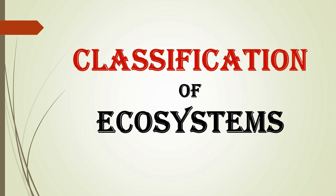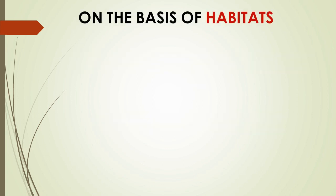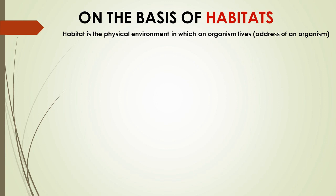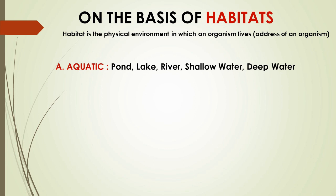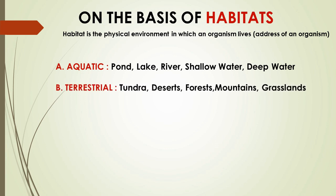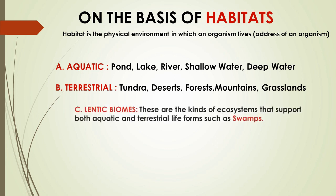Now, the last section of today's session: the classification of ecosystems. On the basis of habitats, ecosystems are classified as: aquatic — pond, lake, river, shallow water, deep water; and terrestrial — land-based habitats such as tundra, desert, forest, mountains, grasslands.